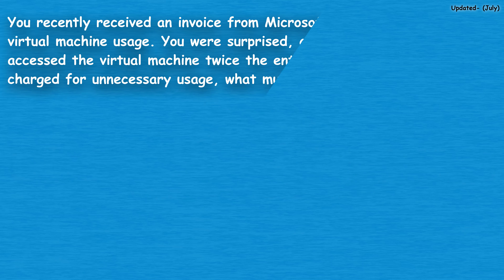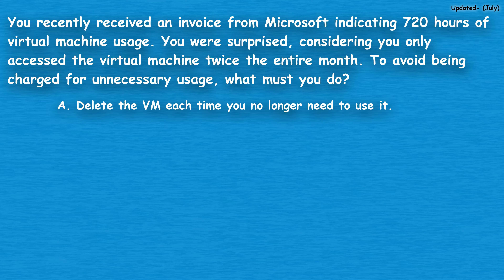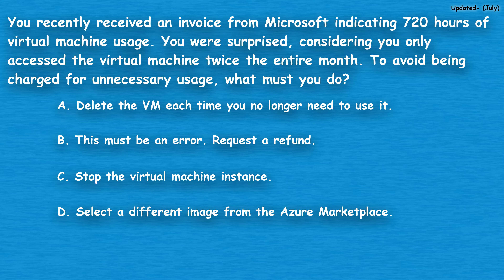The next question: you recently received an invoice from Microsoft indicating 720 hours of virtual machine usage. You were surprised, considering you only accessed the virtual machine twice the entire month. To avoid being charged for unnecessary usage, what must you do? Option A: delete the VM each time you no longer need to use it. Option B: this must be an error — request a refund. Option C: stop the virtual machine instance. Option D: select a different image from the Azure Marketplace.